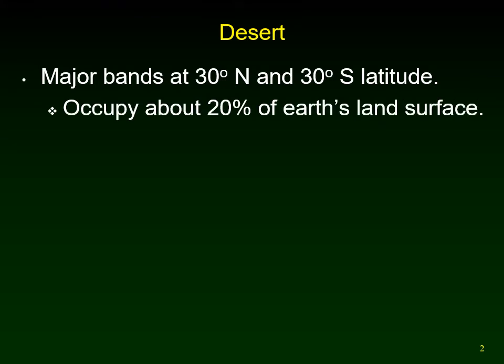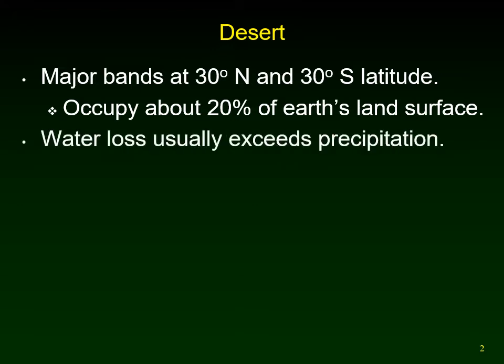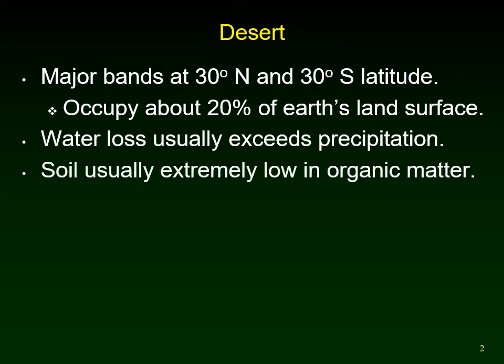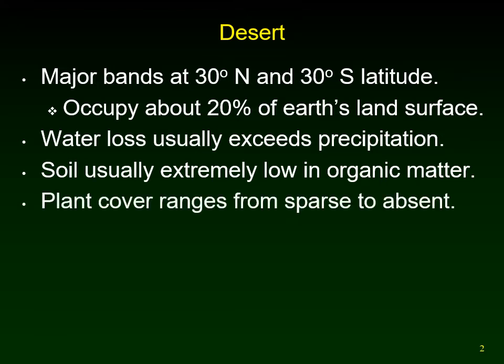Deserts occupy about one fifth — 20% — of the Earth's land surface. Most of the Earth is water, but if we just look at the 30% of the Earth that is land, about 20% of that is desert. Water loss usually exceeds precipitation, so you have more water evaporating into the air than falling down. The soil is extremely low in organic material, and plant cover tends to be spread out.